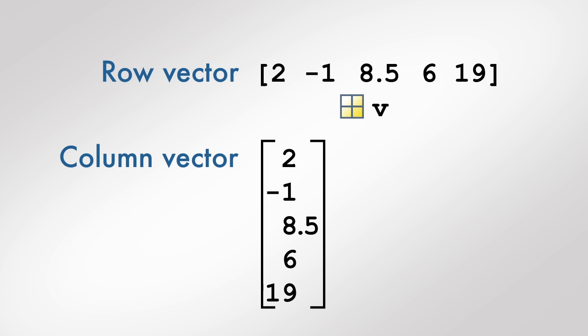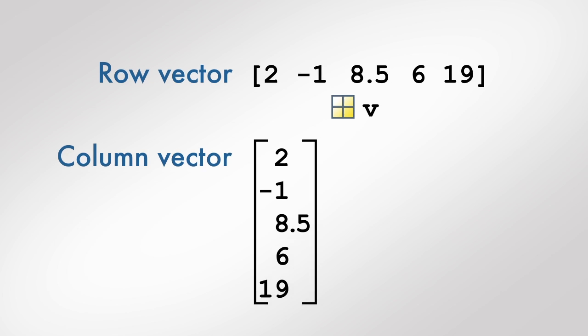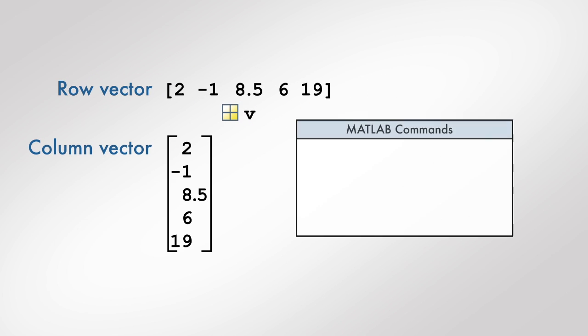Conversely, the transpose of a column vector is a row vector. To compute the transpose of a vector in MATLAB, enter a single quotation mark after the variable name. The result can be stored in a new variable.